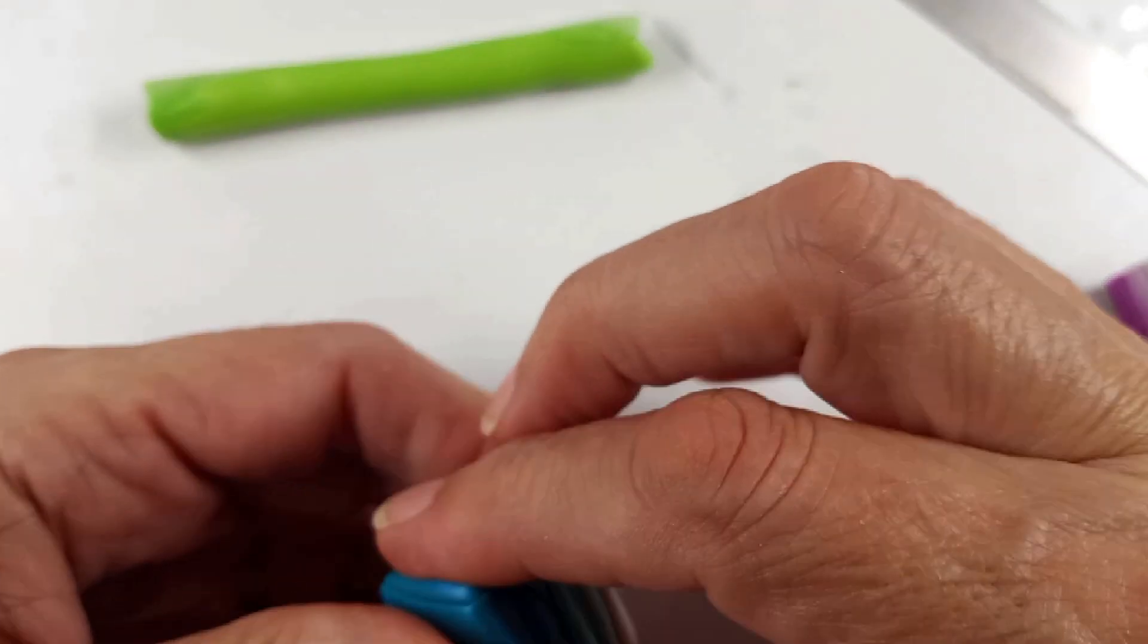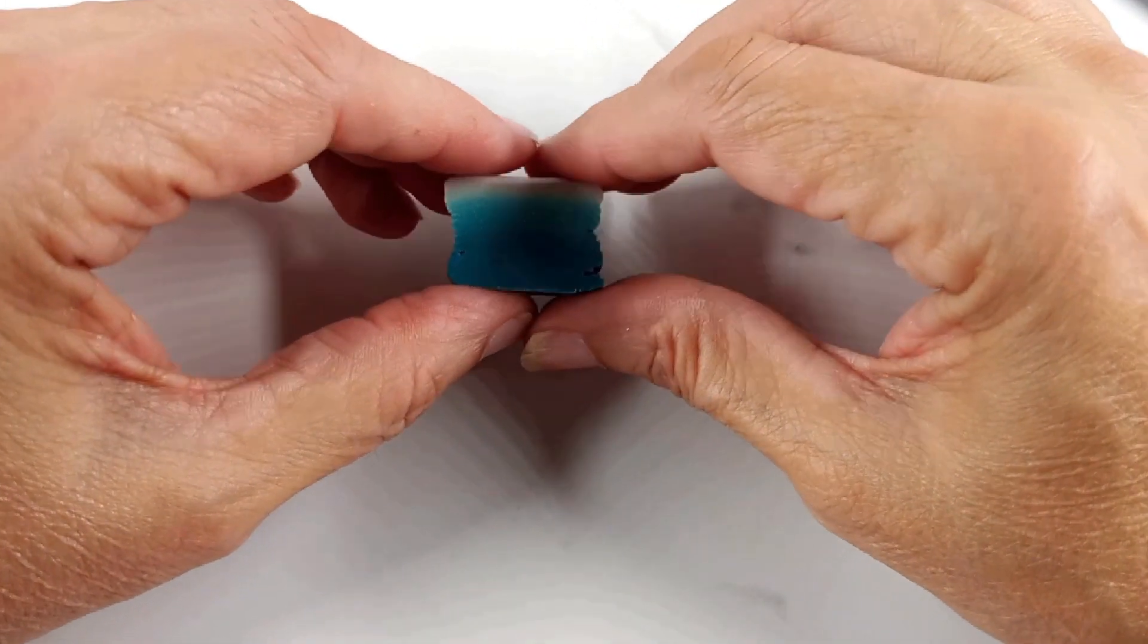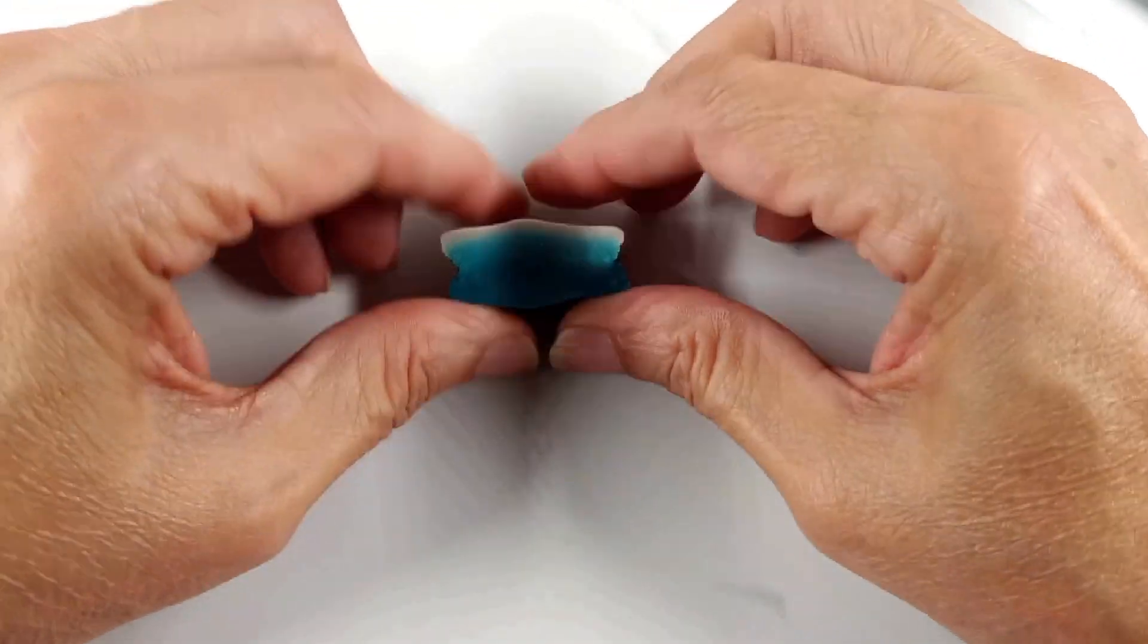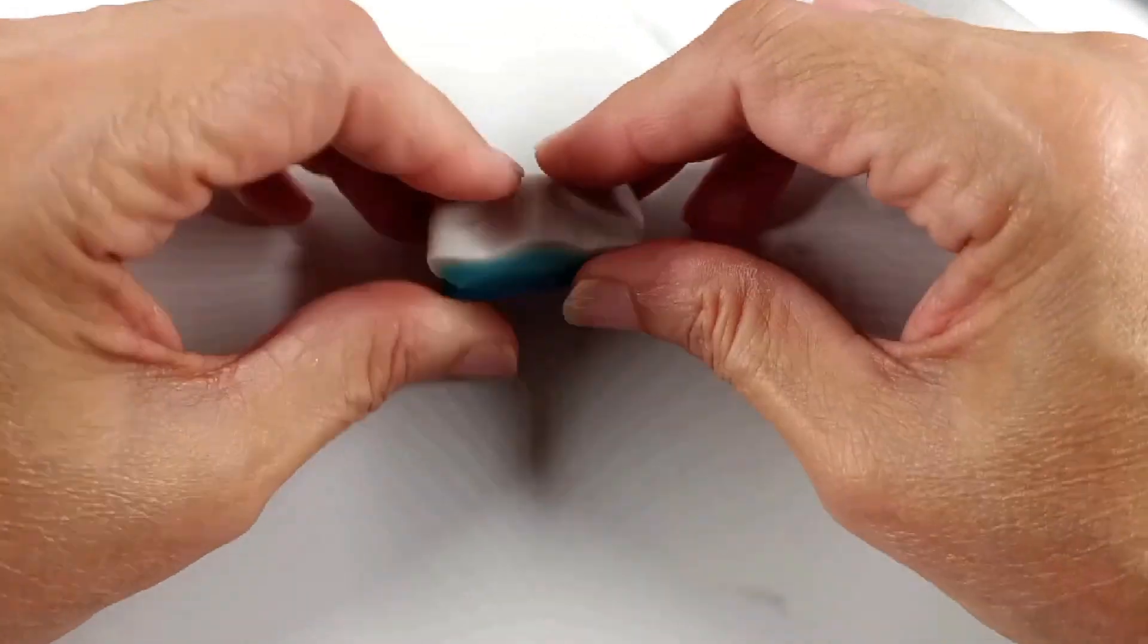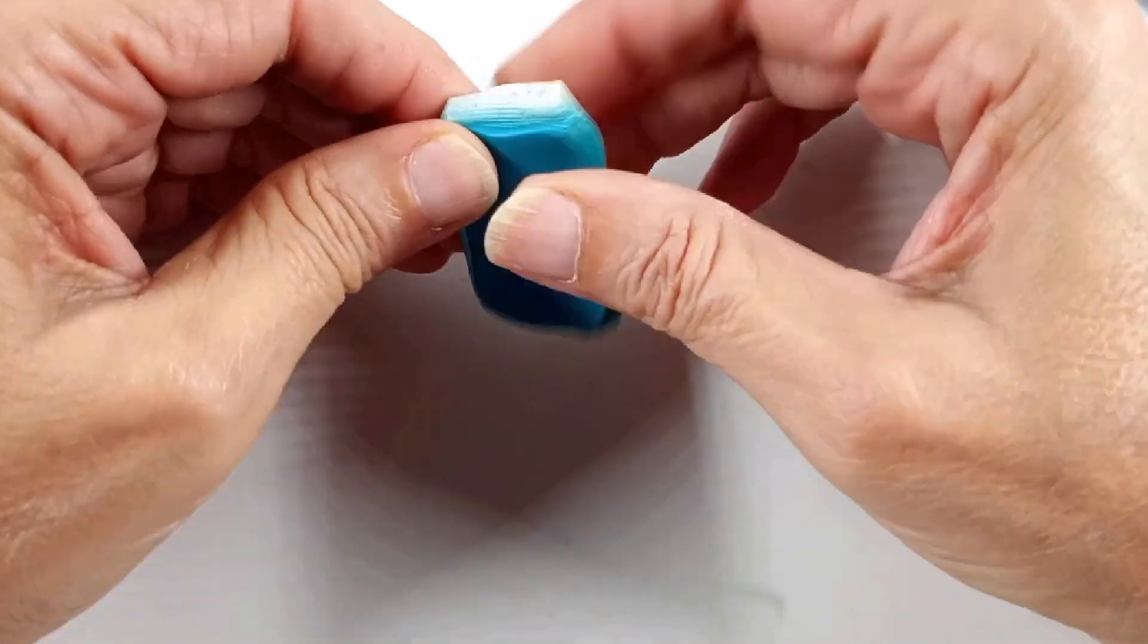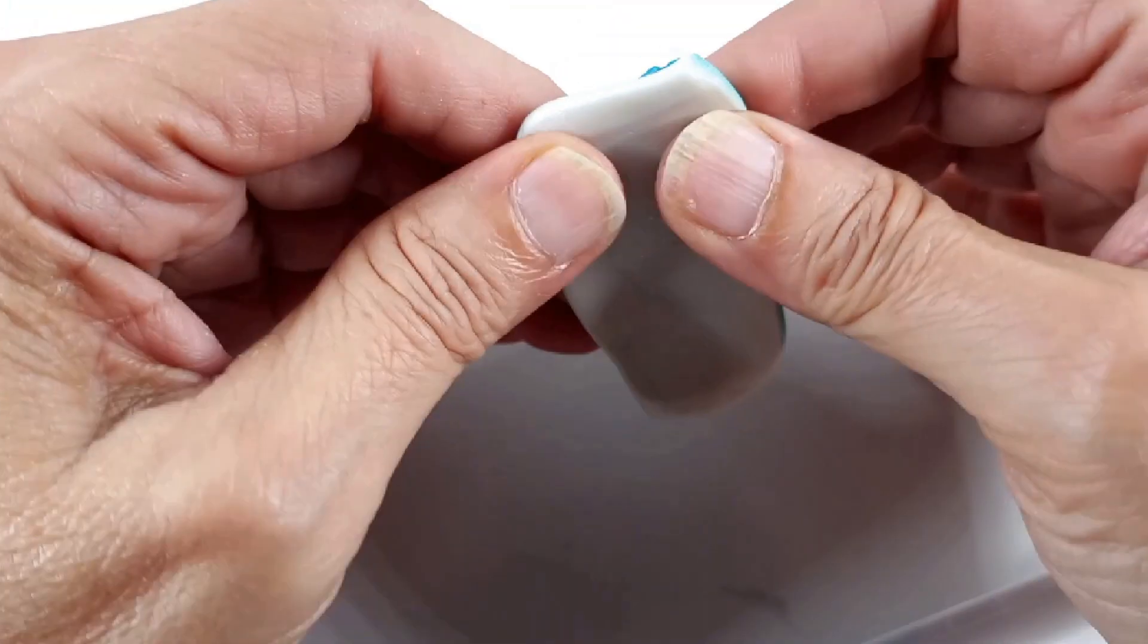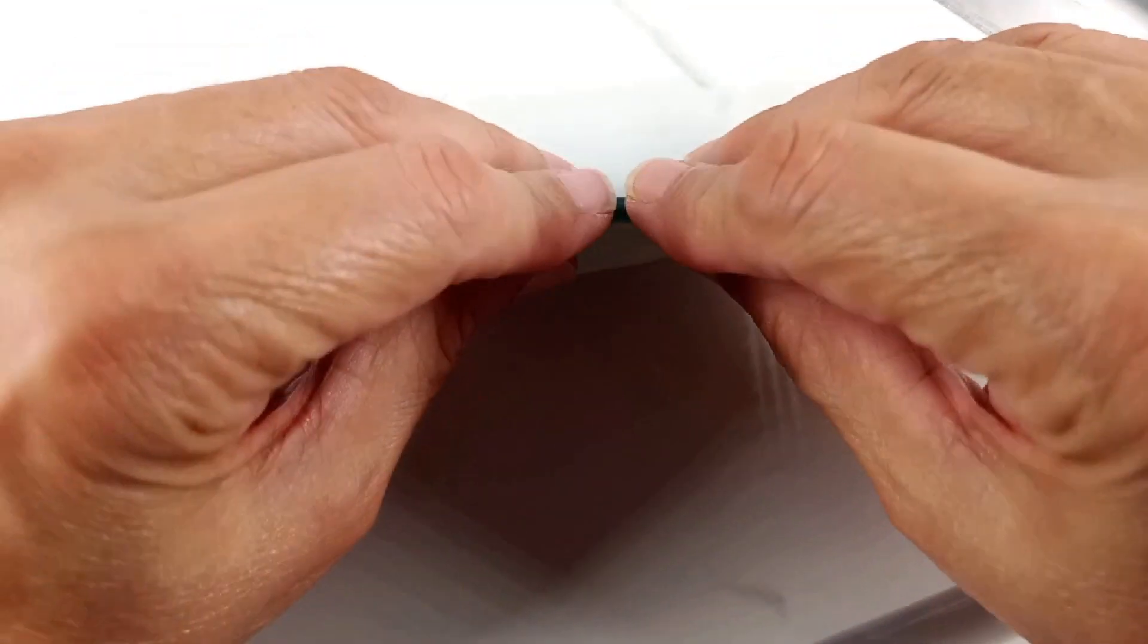I'm going to do the same with all of these. These other ones, I want to make them flatter this way and wider. So we have the blue on the one side and the white on the other and I'm going to do the same with the other two as well.